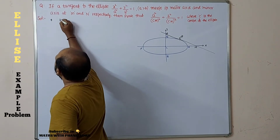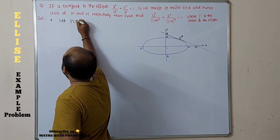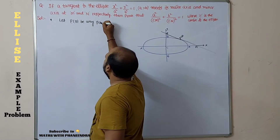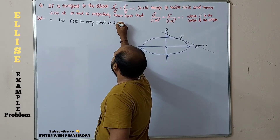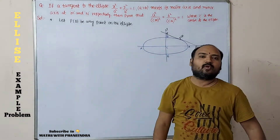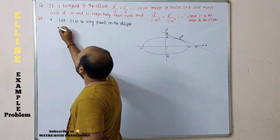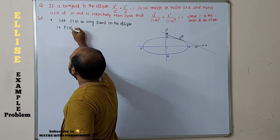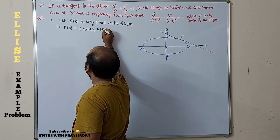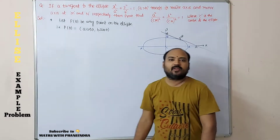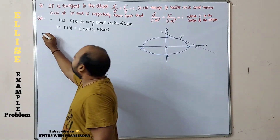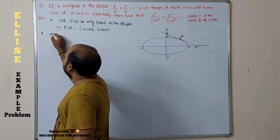Let P(θ) be any point on the ellipse. P(θ) means (a cosθ, b sinθ), the parametric point on the ellipse. At this point, find the equation of tangent. Second step: the equation of tangent at P(θ).